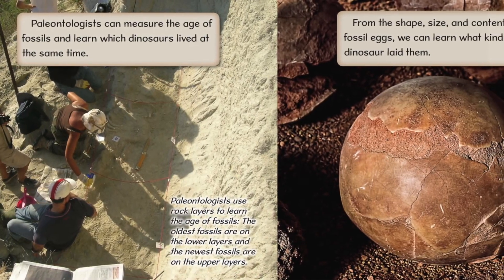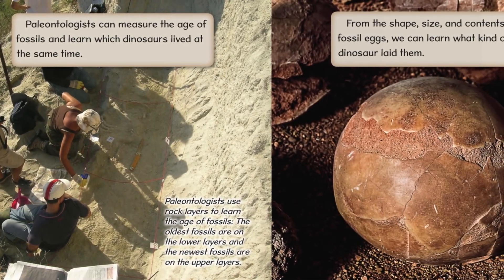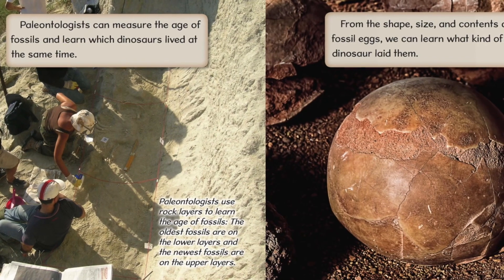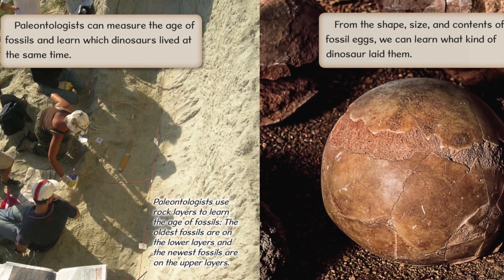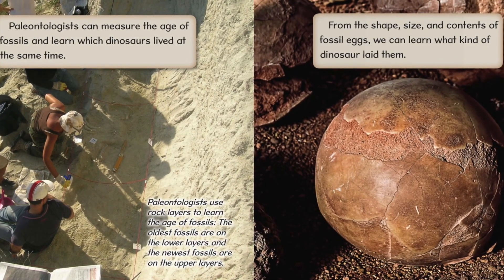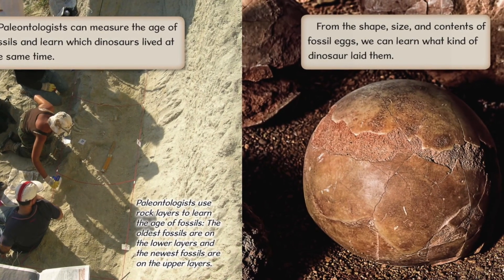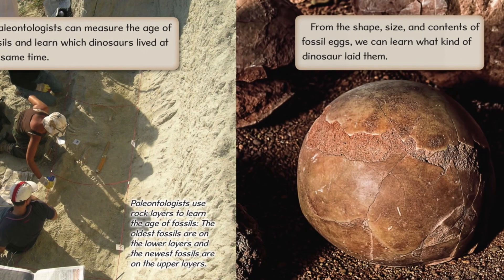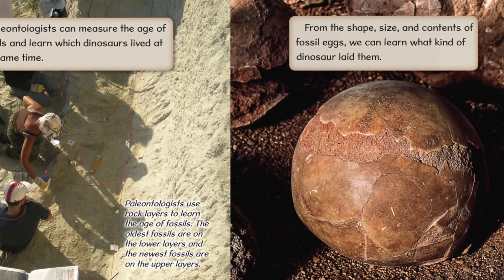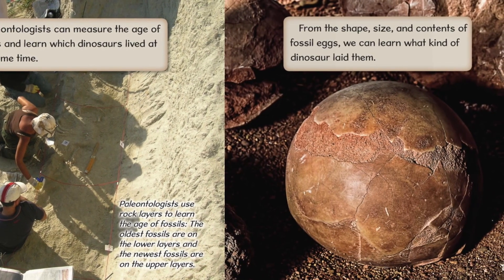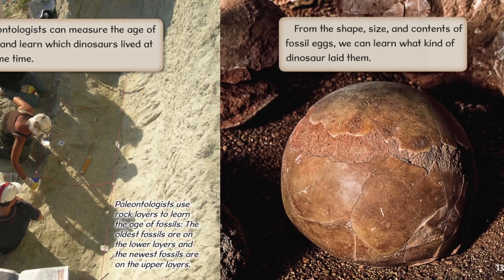Paleontologists can measure the age of fossils and learn which dinosaurs lived at the same time. From the shape, size, and contents of fossil eggs, we can learn what kind of dinosaur laid them.